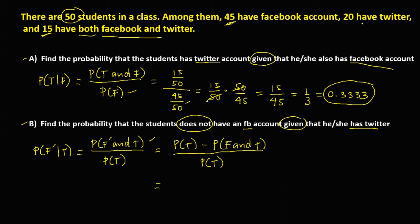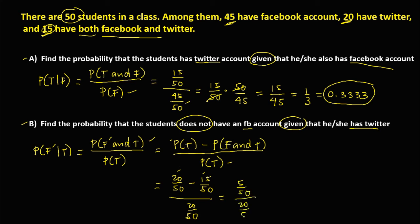Since 20 students have a Twitter account, the probability of having a Twitter account is 20 over 50, minus the probability of having both Facebook and Twitter account, which is 15 over 50, over the probability of having a Twitter account, 20 over 50. To simplify, 20 minus 15 gives us 5 over 50.